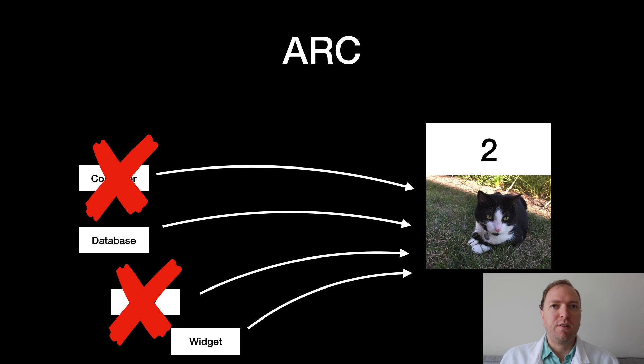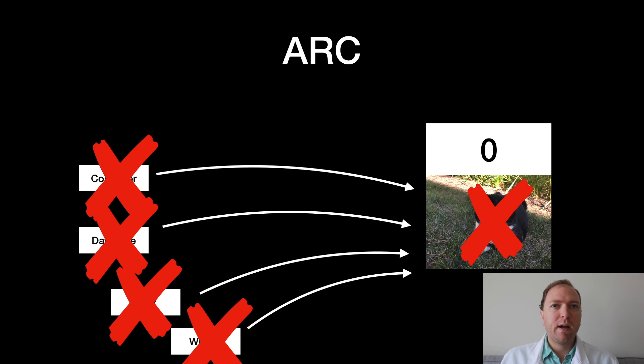When references are destroyed, the system decrements the count. Two references have been destroyed here, so it goes down to two. When the count drops to zero, all references to the object are gone and that means the object can be safely destroyed because nothing else refers to it.